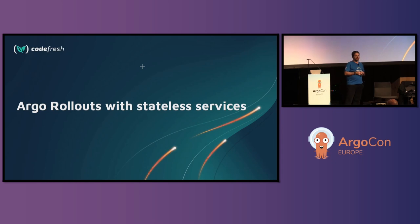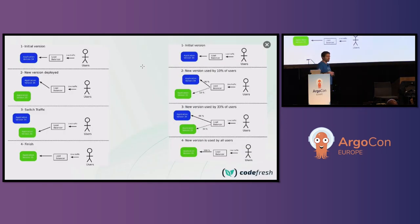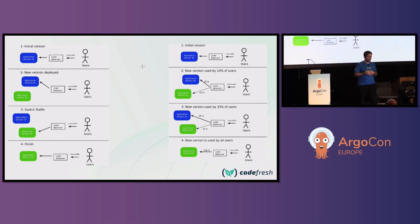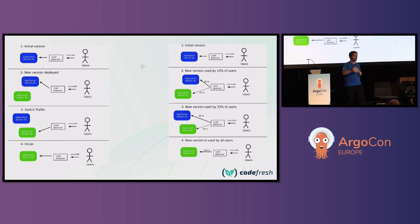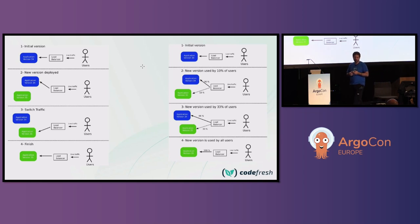If you've never seen ArgoRollouts before, this is a two-minute introduction. ArgoRollouts gives you a Kubernetes controller that provides access to progressive delivery. You can do blue-green deployments where you deploy a second version of your application, run QA and smoke tests, and then promote when you're ready. There's also canary deployment where, instead of a single switch, you gradually send traffic to the new version until you reach 100%.